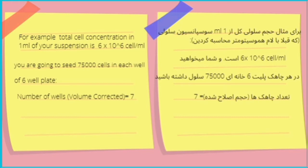Let's say you already know the number of cells in one milliliter suspension, which is 6×10^6, and you need to seed or inject 75,000 cells in each well in a six-well plate. To prevent pipetting errors, we always count one extra well in our experiment. Instead of six wells, you need to perform calculations for seven wells.